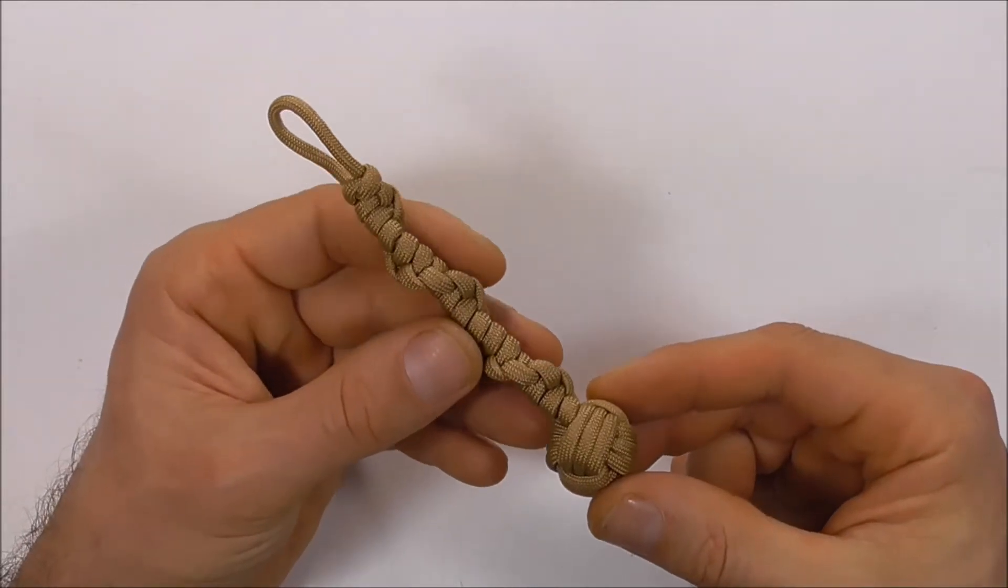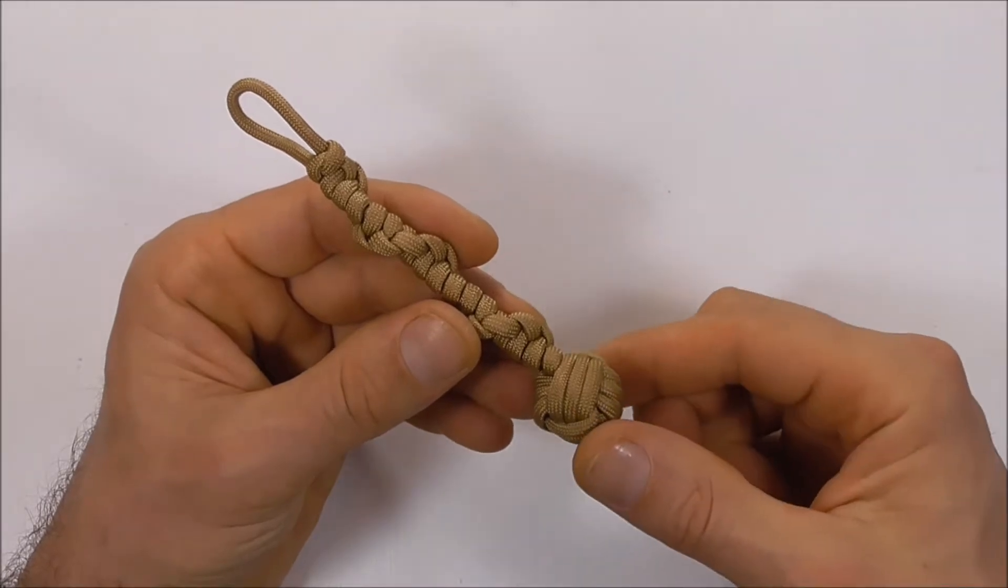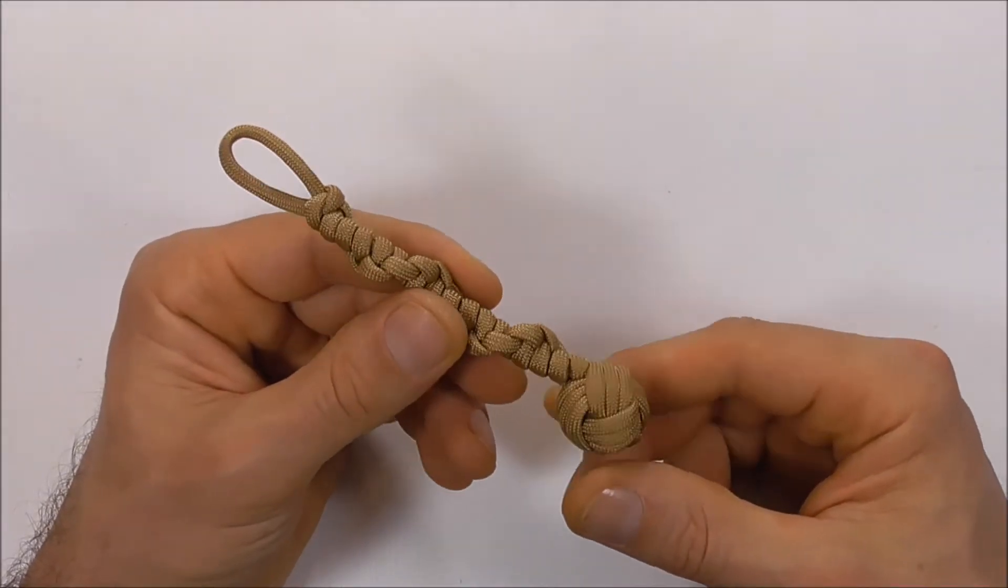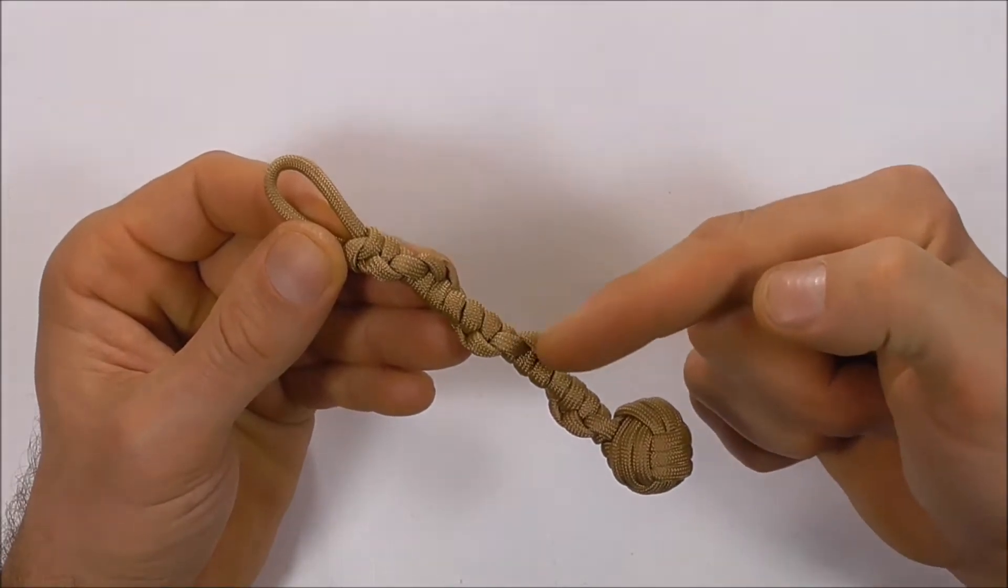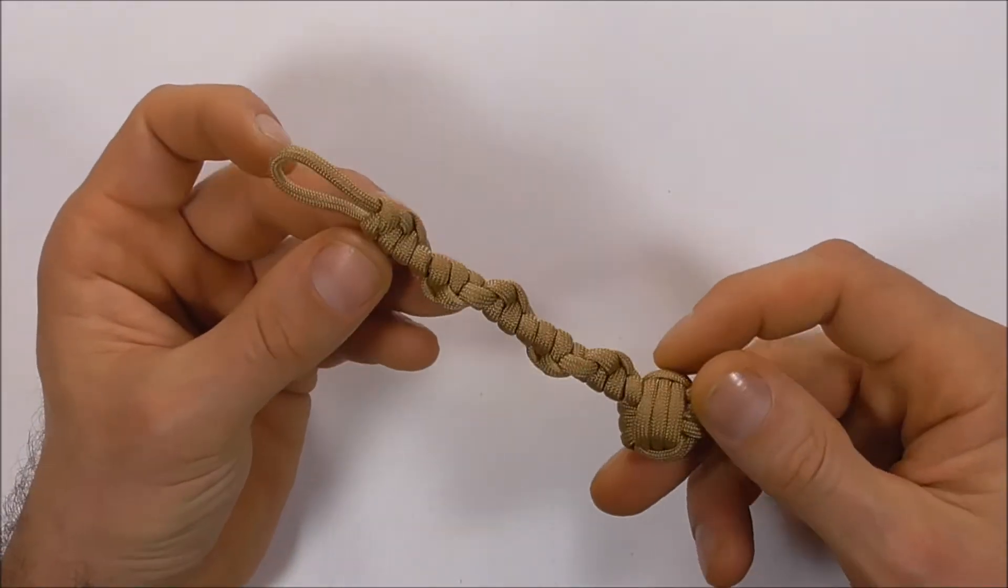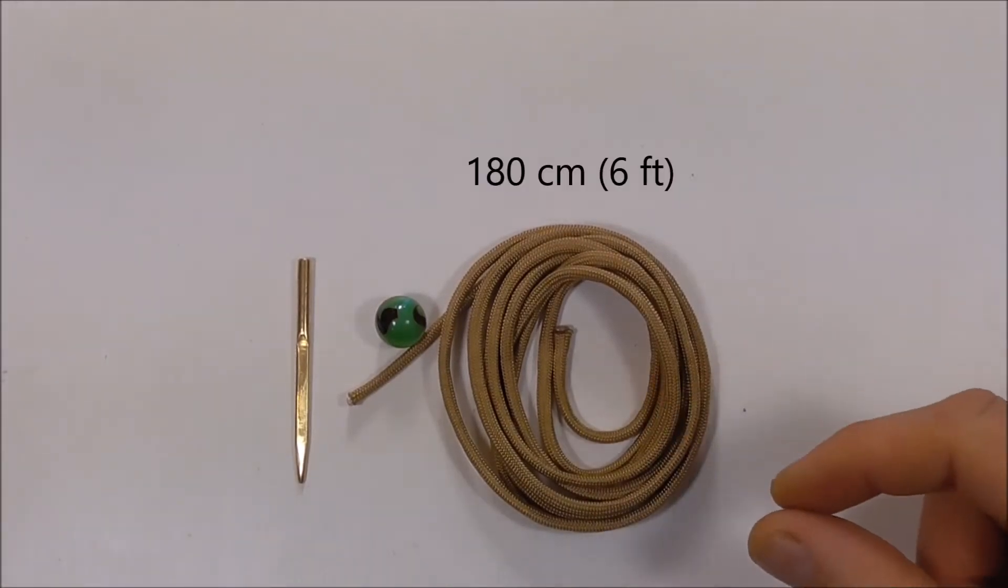Hi YouTube friends, it's Tom here. Welcome! Join me because today we're making a monkey's fist key fob and we're going to do it using French hitching to finish it off. To make this one, I'm using 180 centimeters of 550 paracord, which is around about six feet.